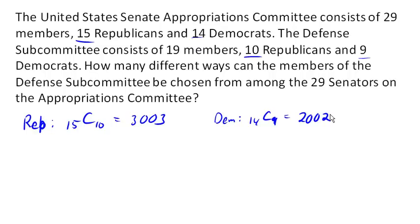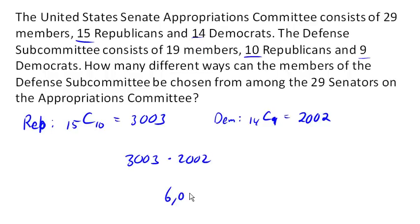But then how about for our entire committee? Imagine that we put all the Republican choices on little slips of red paper — so we have 3,003 pieces of red paper — and then put all 2,002 Democratic choices on little slips of blue paper and threw them all in a hat. How many ways could we pick one red slip and one blue slip? There are 3,003 possibilities for choosing a Republican contingent, and 2,002 choices for choosing a Democratic contingent. So we simply multiply those together, just like our restaurant choices, and we end up with over 6,000,000 different ways of selecting the members of the subcommittee.